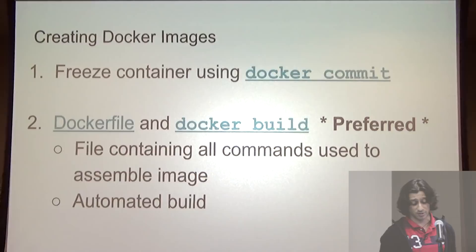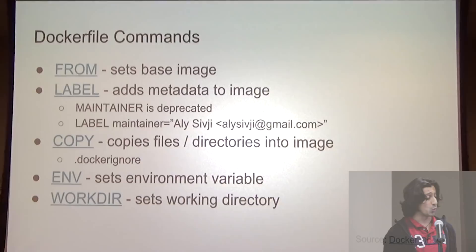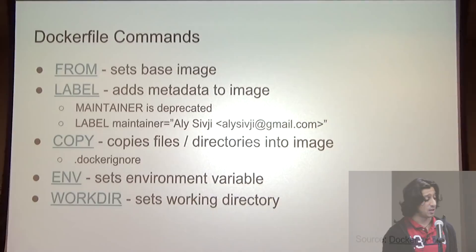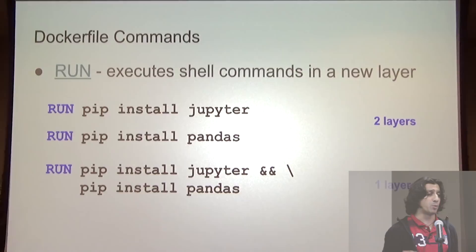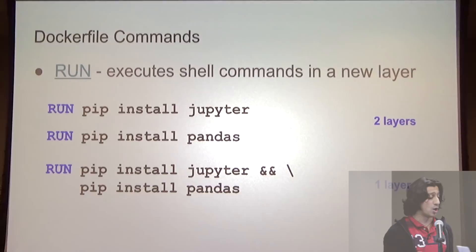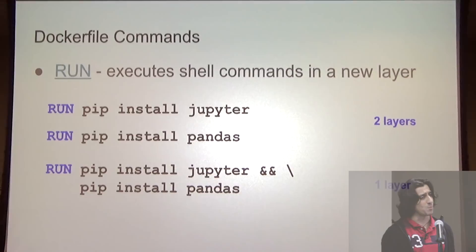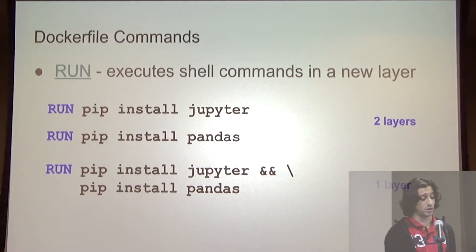Here's a list of common Dockerfile commands. FROM sets the base image — what image are we building off of — and we can use a repo name from Docker Hub. LABEL sets metadata. We can COPY files and directories into an image and set environment variables and the working directory. The RUN command executes shell commands in a new layer at the top of the image stack. Be aware that every Dockerfile command creates a new layer, so Docker best practices say to minimize layers by chaining commands: instead of two separate RUN pip install statements, chain them with && and a backslash to continue on the next line, so you only have one layer.